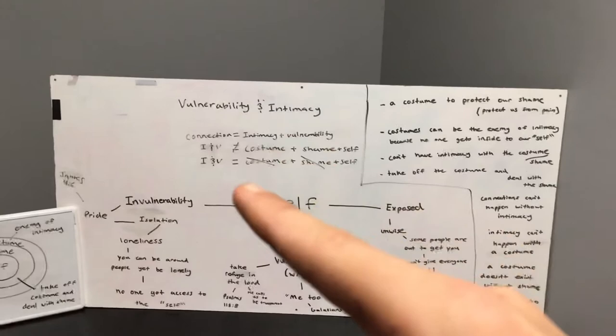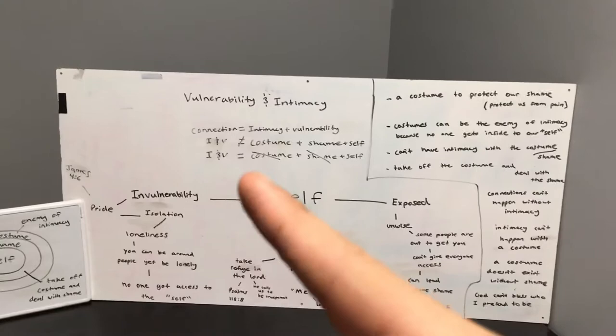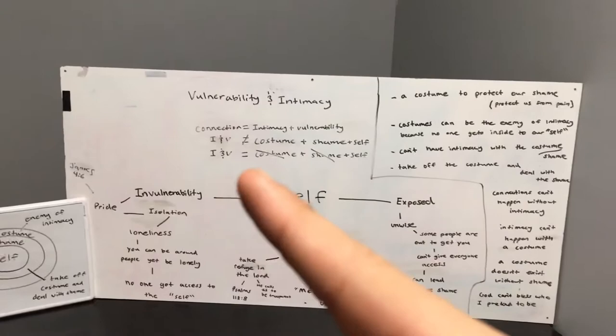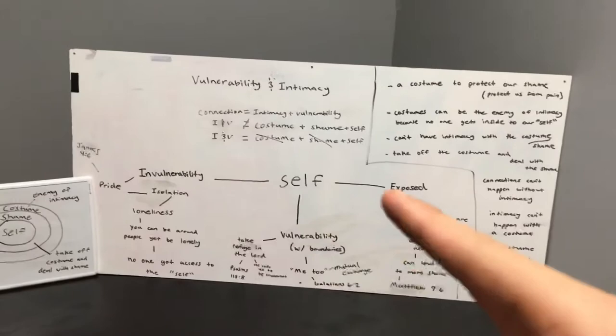We got a little math equation here. If we're trying to reach connection, we have intimacy plus vulnerability—that's what connection equals. Intimacy and vulnerability cannot equal costume plus shame plus self. Intimacy and vulnerability equals the self. So we have a few different ways we can go with the self.